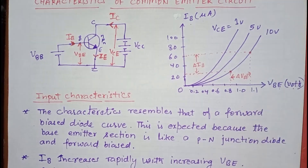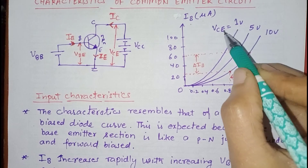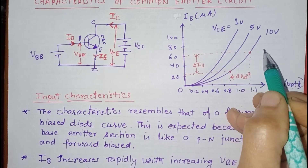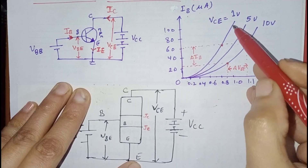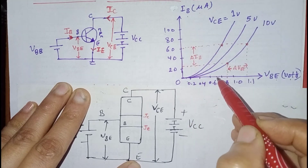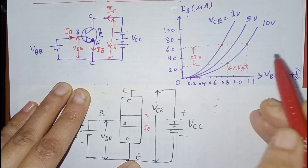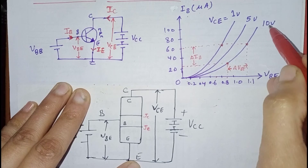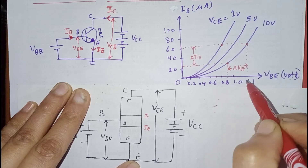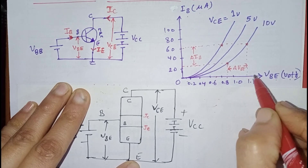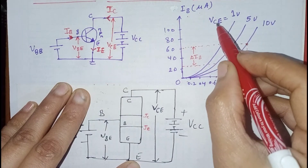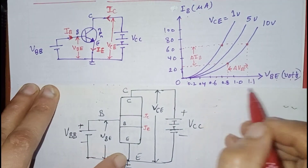Another observation is that as we increase the fixed value of VCE, the curves shift towards the right. For example, when VCE is fixed at 1 volt, IB is 60 microamperes at VBE of 0.7 V. When VCE is increased to 10 volts, IB is still 60 microamperes but VBE is now approximately 1.1 volts. So IB reduces when VCE is increased while keeping VBE fixed.